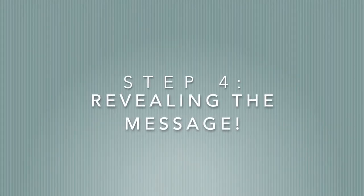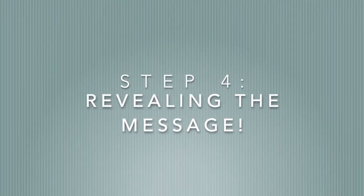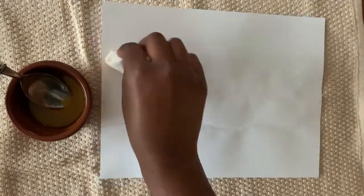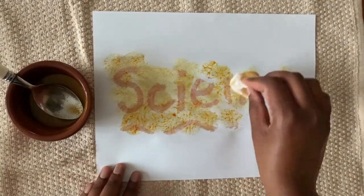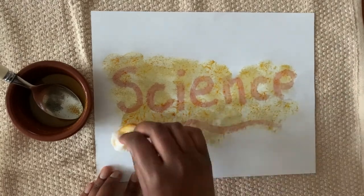Once the message is dry, it's time to reveal it. Dip your cotton ball in the turmeric solution and dab it over your paper. Your message shows up in bright red.